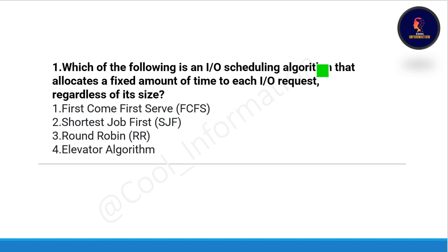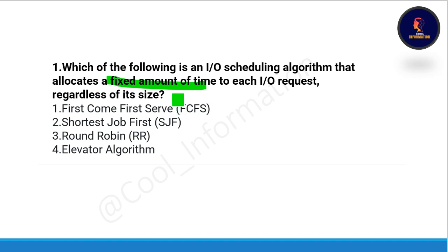The first question is: which of the following is an input-output scheduling algorithm that allocates a fixed amount of time to each input-output request regardless of its size? The options are: first come first serve, shortest job first, round robin, or elevator algorithm. The correct option is option number three, which is round robin.